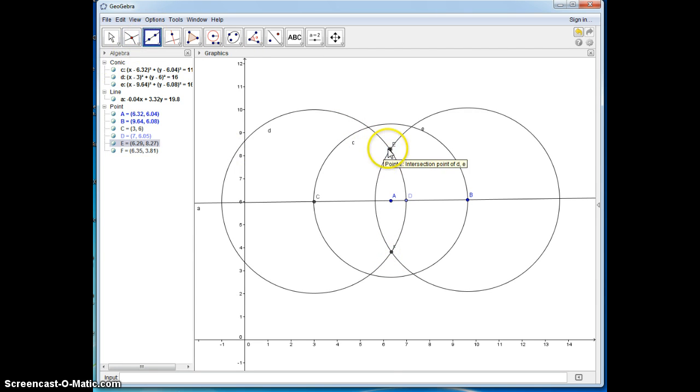Now I'm going to use the line tool. And what I just created is a perpendicular bisector of CB. Now I'm going to intersect again.